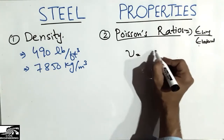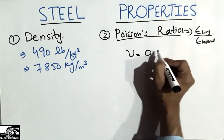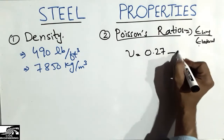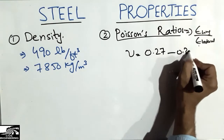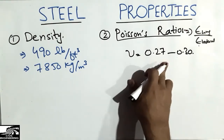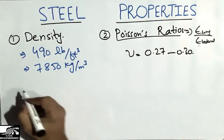The Poisson's ratio of the steel bar is in the range of 0.27 to 0.30.